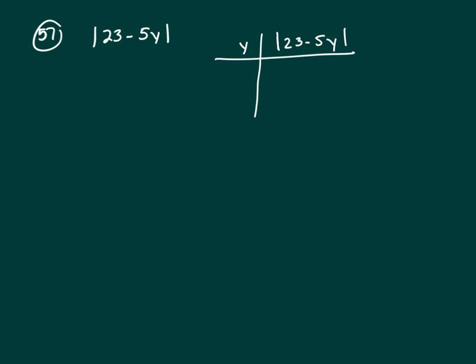We are trying to figure out the least value of 23 minus 5y, absolute value of that. And we know y is an integer.